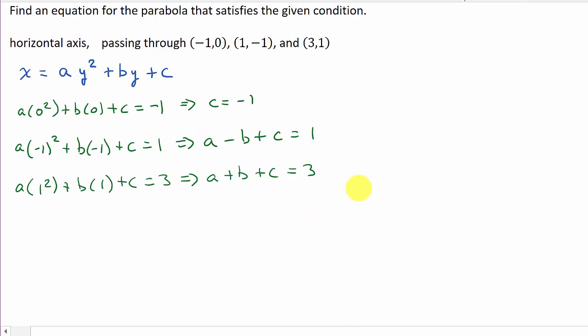Alright, so let's see what we've got. Well, if you look at this here, so this gives us a minus b. And if we plug the negative 1 in for c, that's going to be minus 1 equals 1. And then a plus b, and then plug the negative 1 in for c minus 1 equals 3.